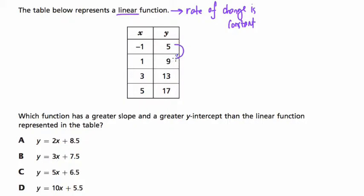So let's look at this table. Even before I read this, I'm going to find the rate of change. I notice that y goes from 5 to 9, so that's plus 4, and x is going up from negative 1 to 2, so that's plus 2.